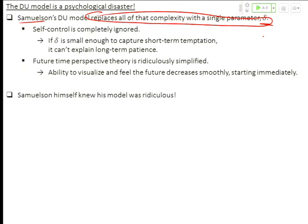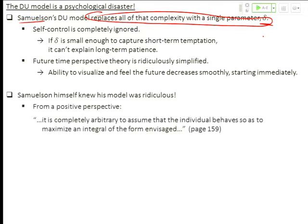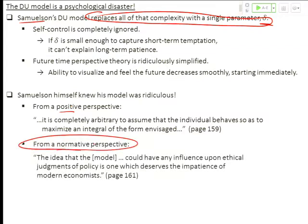Samuelson himself. Now this is where I want you to just really, well, I'll say this, and then I'll make my caveats. Samuelson himself in '37 knew that his model was ridiculous. This was a mathematical exercise, and if you read the paper, it's very, very clear that this was nothing but a mathematical exercise to Samuelson. From a positive perspective, he said the following: It is completely arbitrary to assume that the individual behaves so as to maximize an integral of the form envisaged. Remember, the utility function is this sum of delta to the t times ut. So this is just the discrete time version of an integral. He did it in continuous time, so that was an integral. He says it's arbitrary to assume that the individual behaves so as to maximize that utility function. Arbitrary is a fairly strong word. From a normative perspective, the ability to actually explain people's choices. I love this language.